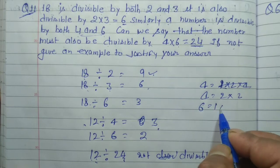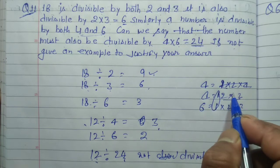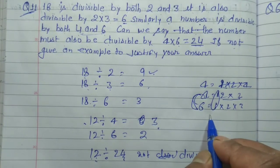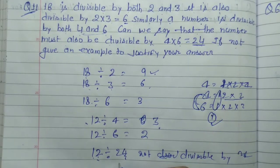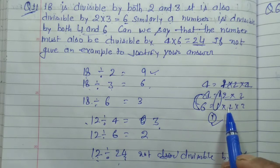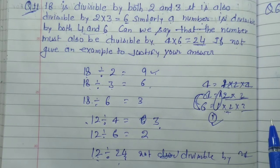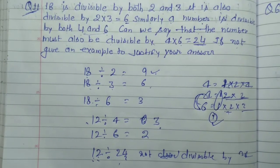Now for prime factorization. The prime factors of 24 are 2 × 2 × 2 × 3. Twelve is divisible by 4 and 6 but not divisible by 24.